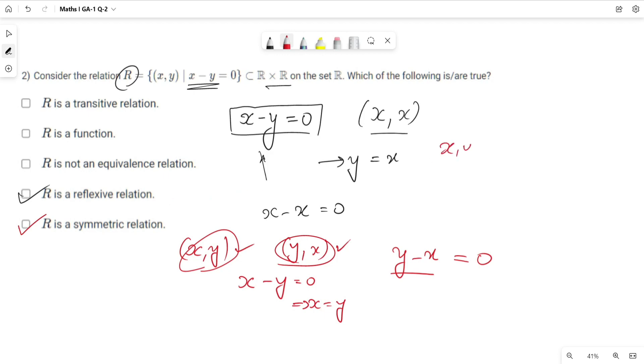For transitive relation: if (x, y) belongs to R and (y, z) belongs to R, then (x, z) should belong to R. To check this: x - y = 0, and (y, z) belongs to R means y - z = 0. From the first equation we get x = y. From the second equation we get z = y, which means x = z.